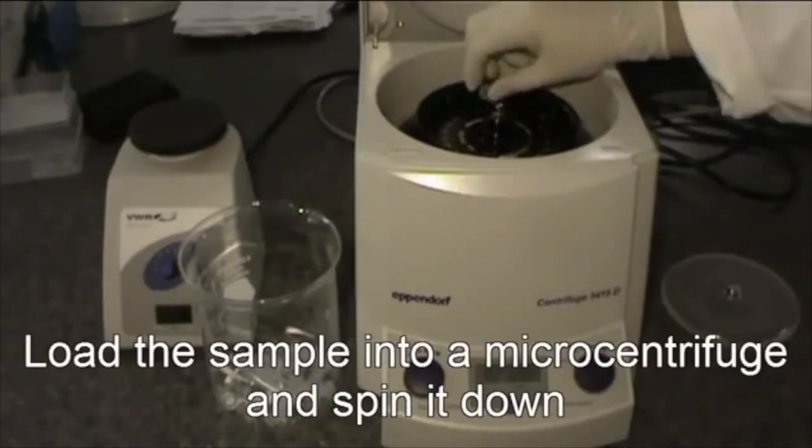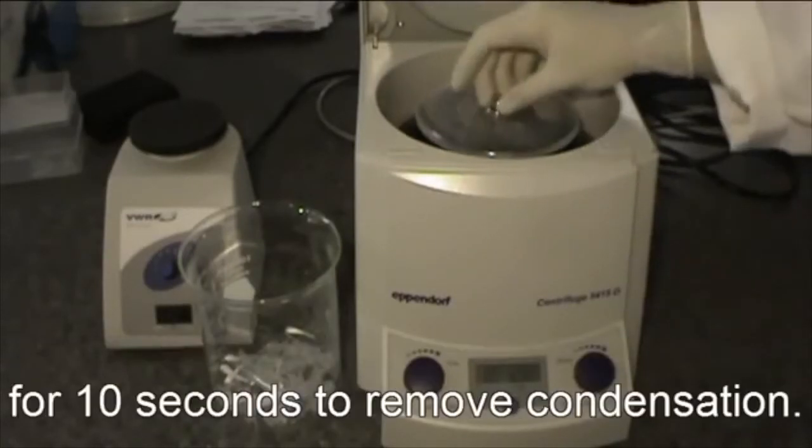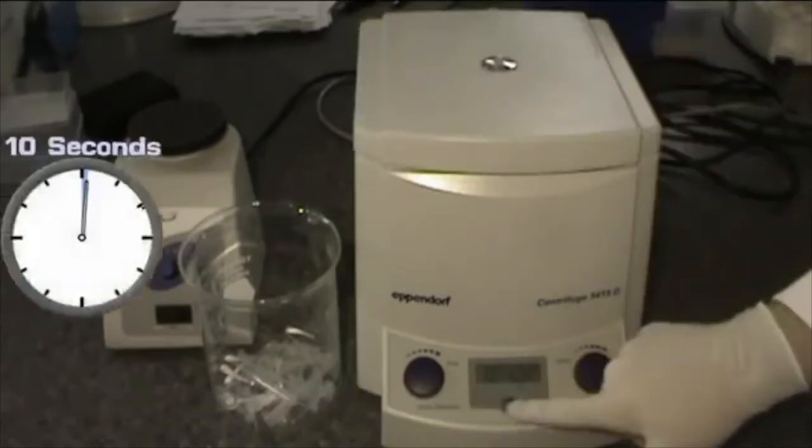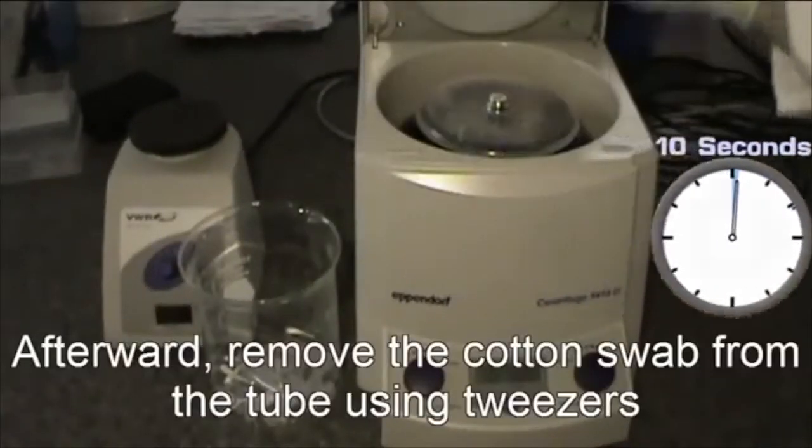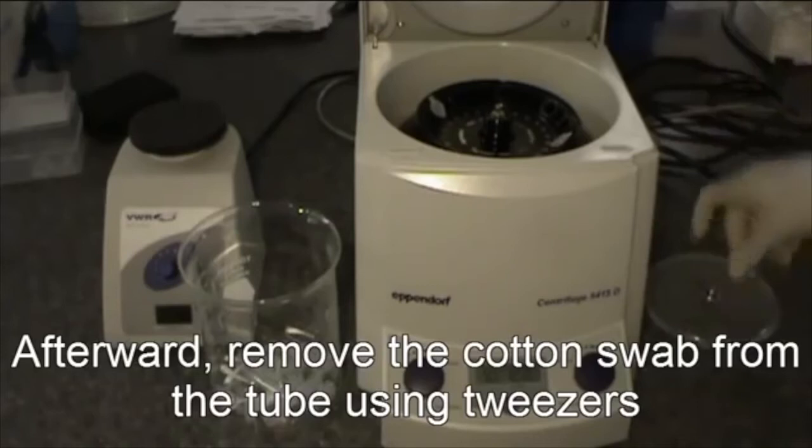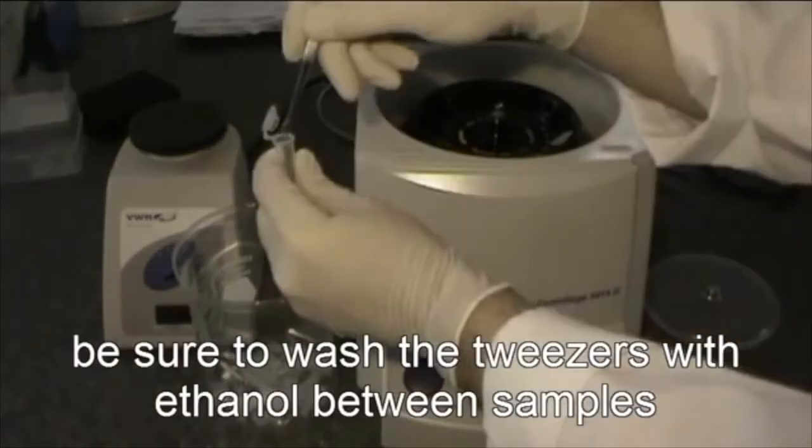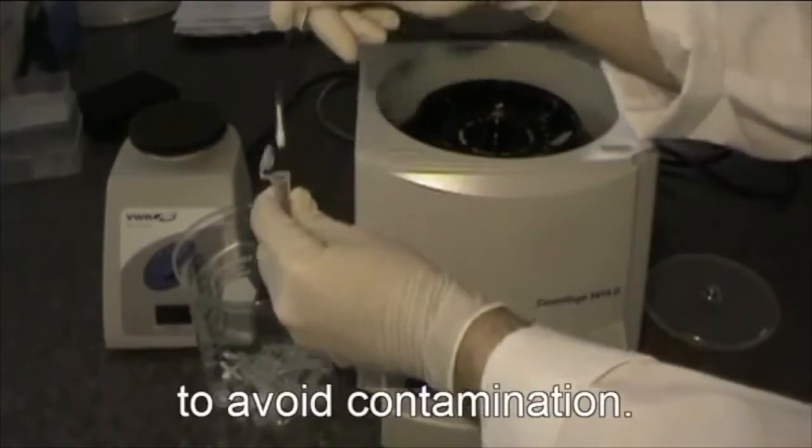Load the sample into a microcentrifuge and spin it down for 10 seconds to remove condensation. Afterwards, remove the cotton swab from the tube using tweezers. Be sure to wash the tweezers with ethanol between samples to avoid contamination.